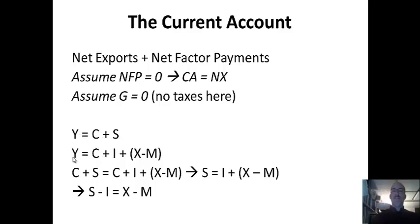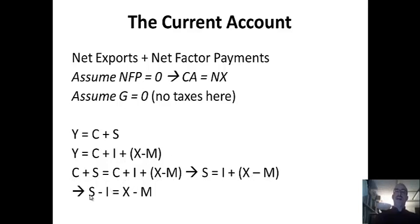For the GDP equation, you have Y = C + I + X − M (with G removed). Since both expressions equal Y, you can say C + S = C + I + X − M. C drops out on both sides, giving S = I + X − M. Bringing it over to the left side, you have S − I = X − M. So there's a relationship between international lending and borrowing and being a net exporter or net importer.